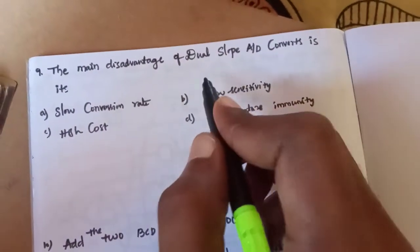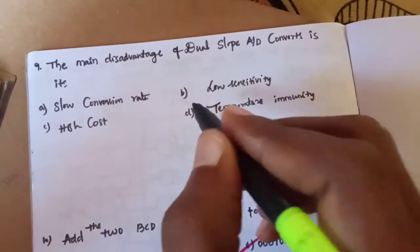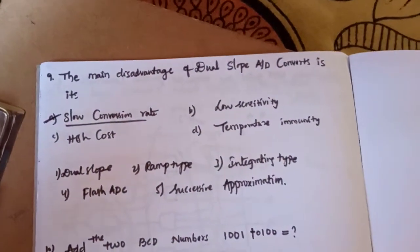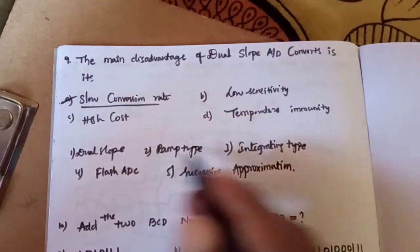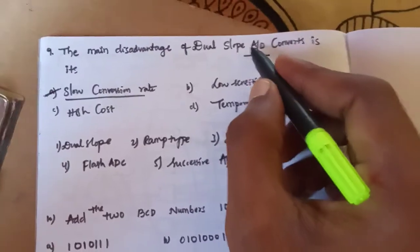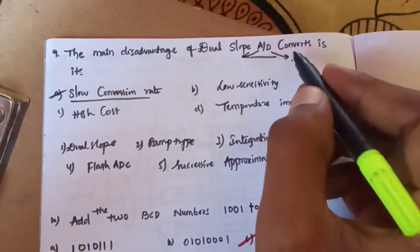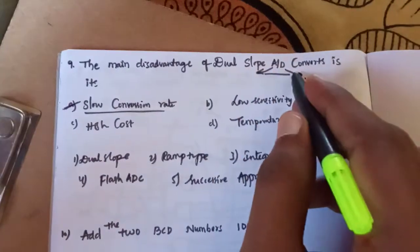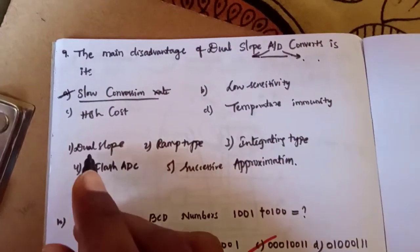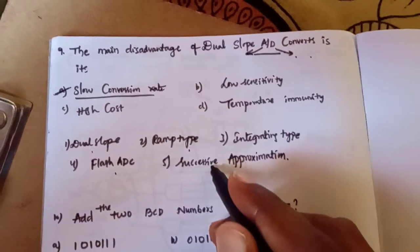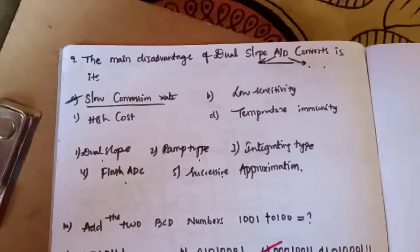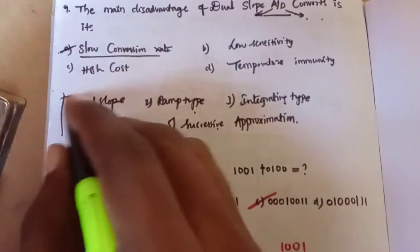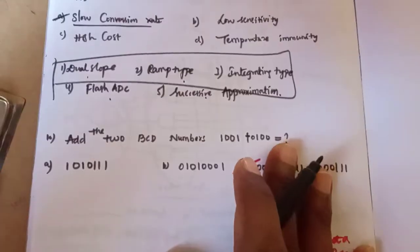The main disadvantage of the dual-slope ADC converter is slow conversion rate. An ADC converts analog signal to digital signal. Types include dual-slope, ramp type, integrating type, flash ADC, and successive approximation ADC. The successive approximation ADC is one of the most commonly chosen types.